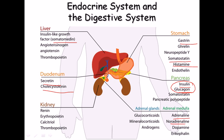The adrenal gland secretes adrenaline and noradrenaline, which are important during fight-or-flight responses — dangerous or emotionally intense conditions — and also produces dopamine. These hormones are closely linked with the nervous system. The kidney releases renin and erythropoietin, which help regulate various expression pathways, and also produces thrombopoietin.